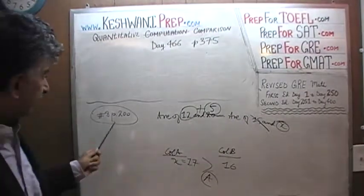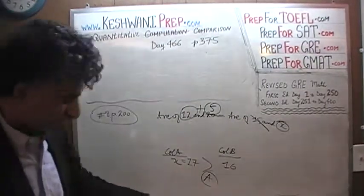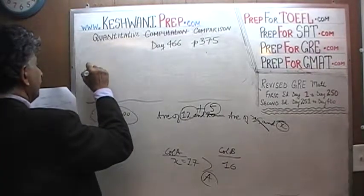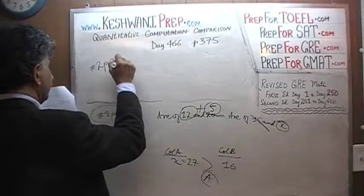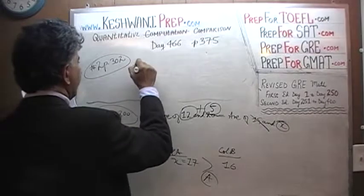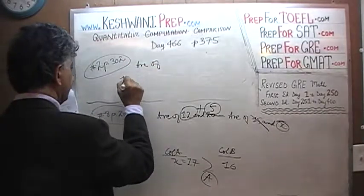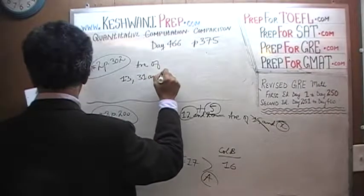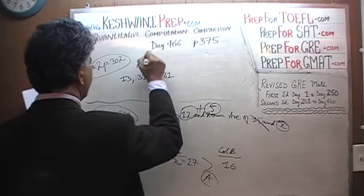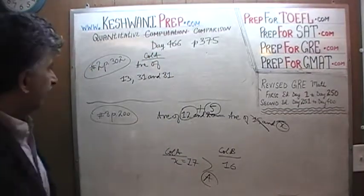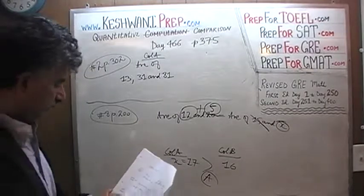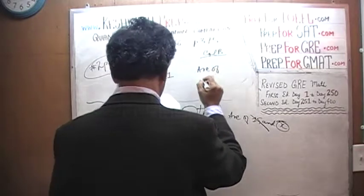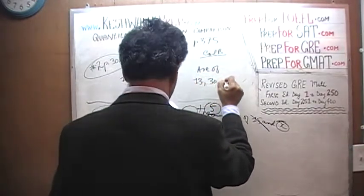Of course, these are problems we have already done — this was on page 200 and we are on page 375 now. Let's do one more. This one appeared as number 2 on page 302. We are being asked to compare the average of 13, 31, and 81 in column A, versus the average of 13, 30, and 81 in column B.